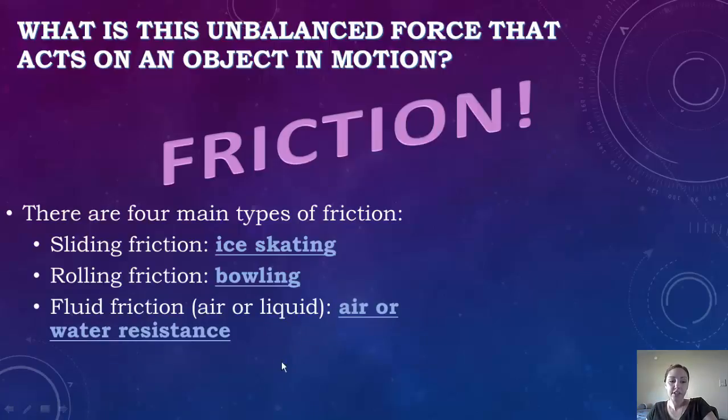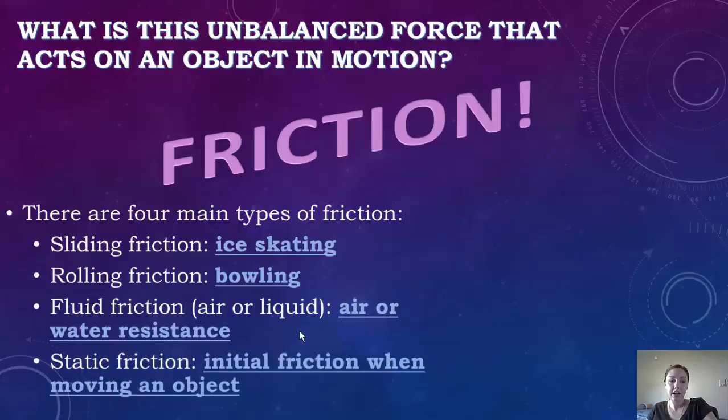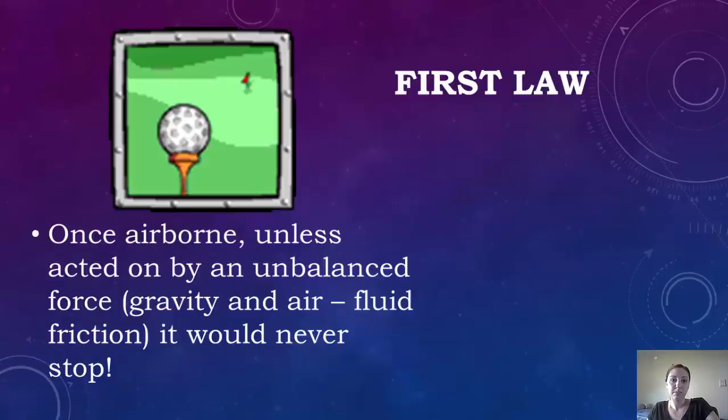You have fluid friction, which can be either air or liquid. It's basically when air or water is resistant. And then you have static friction, which is the initial friction when an object is moving. So when you're rolling your hands together to keep warm, between your hands there's going to be friction. So there's many types of friction.